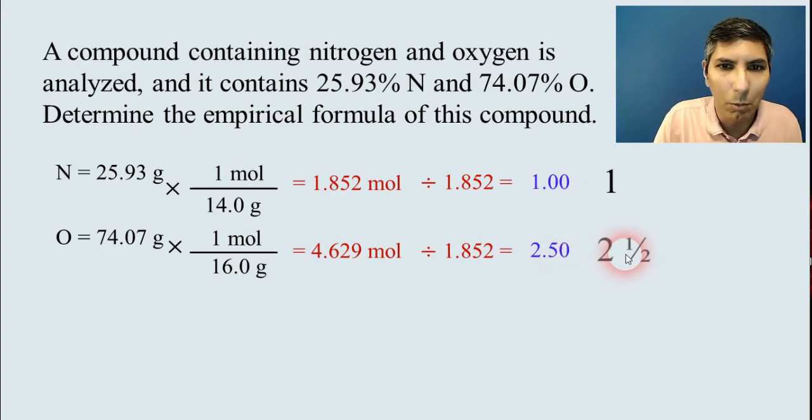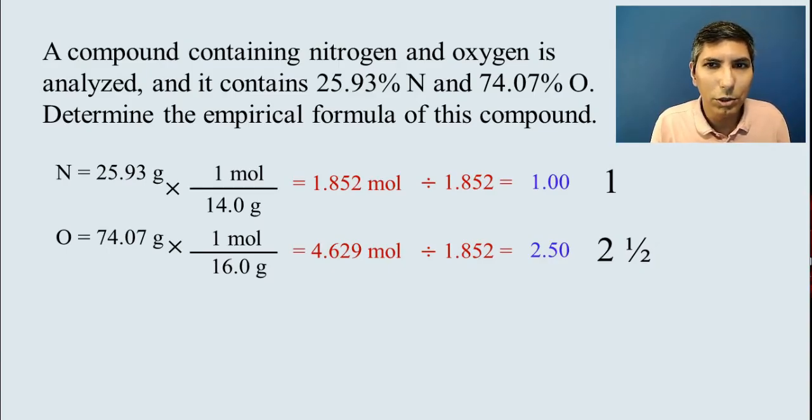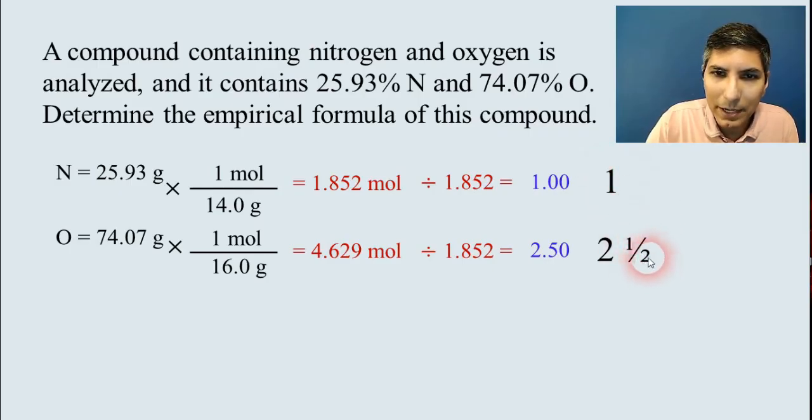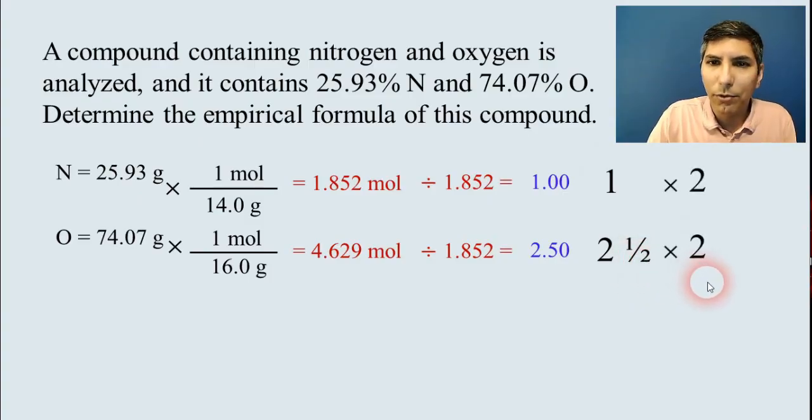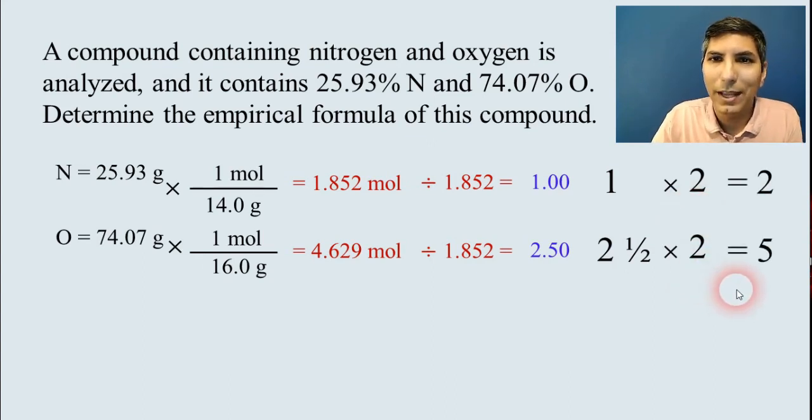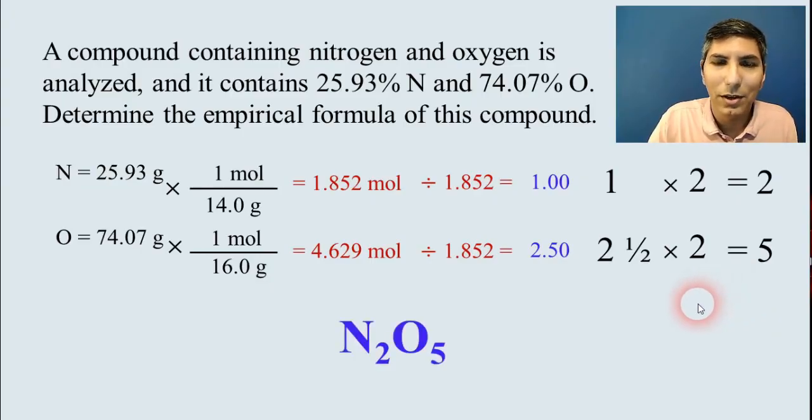So it looks like my subscripts are 1 and 2 and a half. And we all know that you can't have half of an atom, can you? You can't have a formula of NO2 and a half. It doesn't work that way. So what we do is we're going to have to multiply both of these values by that denominator right there. So in this case, that denominator is a 2. So when I multiply both numbers by that value, I get subscripts that are actual whole numbers now, 2 and 5. So my empirical formula is N2O5.